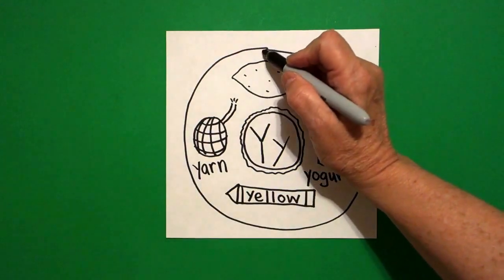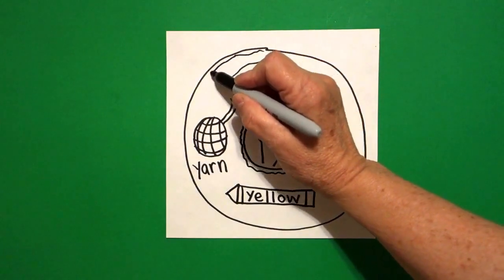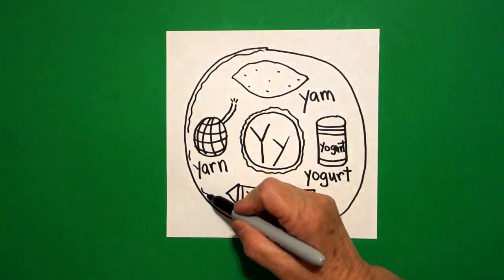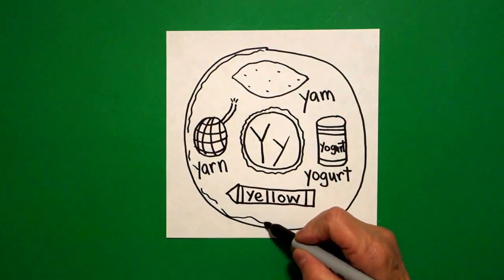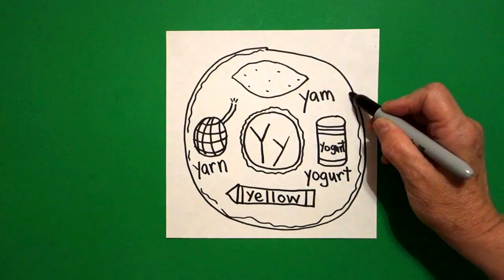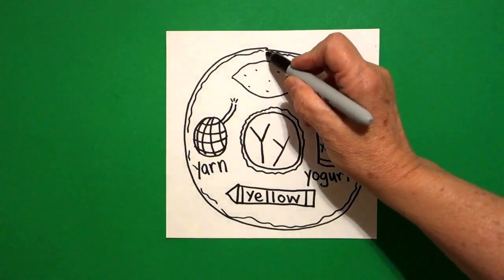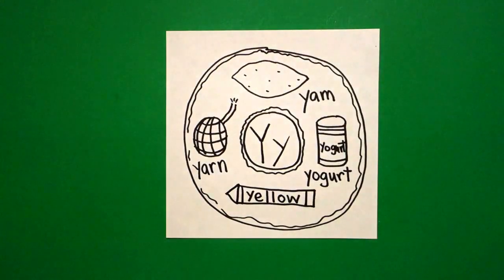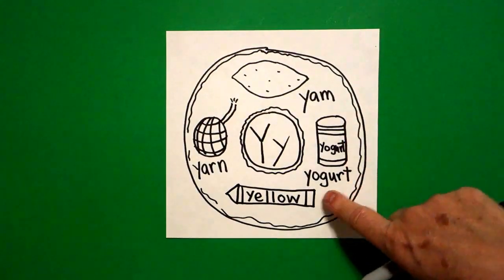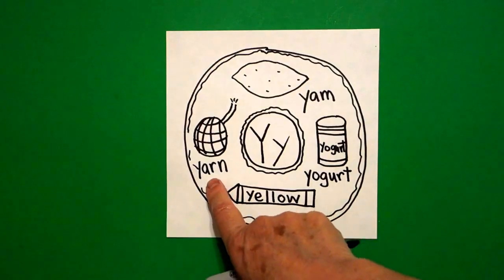I come back to the top and I'm going to draw that wavy, wavy, skinny, mini line. Jump over your pictures. Jump over your words. You don't want to draw anything through there. And this makes the cake part of your donut. So we have yam, yogurt, yellow, and yarn.